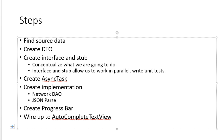Meanwhile, while we're all working against this stub, we can continue to build the actual implementation class. And when the implementation class is ready, that implementation class will also extend the interface that the stub implements. So we can simply remove the stub and replace it with the actual implementation. Let's think of the stub as a prototype.